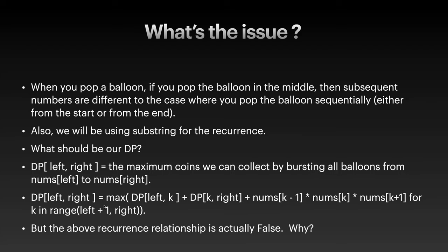Our recurrence relationship will be: we take the maximum over all balloons we can pop, where k runs from left+1 to right-1 (in Python notation). We take the maximum of all these values. But this recurrence relationship is not actually correct — if you try it you'll see it doesn't give the right answer.